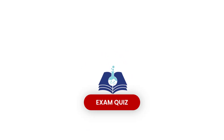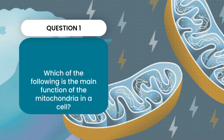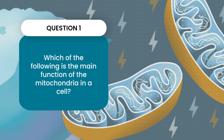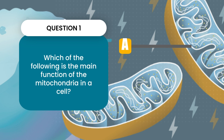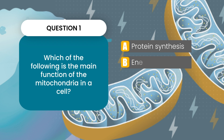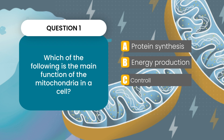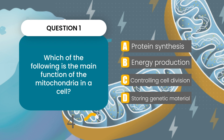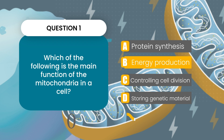Question number one: which of the following is the main function of the mitochondria in a cell? Is it a) protein synthesis, b) energy production, c) controlling cell division, or d) storing genetic material? The answer is b) energy production.